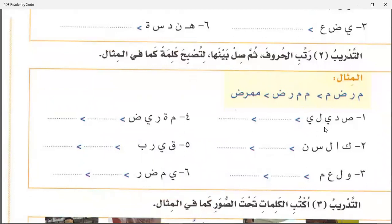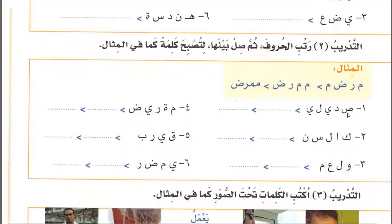Now we need to make a word from these letters also. The first letter here is Swad, second is Yaah, third is Daal, fourth is Laam, and fifth is Yaah — the word is Sayyid Ali. Similarly, you will make a word here: Kaaf, Seen, Laam, Alif, Noon — Qaslaan.